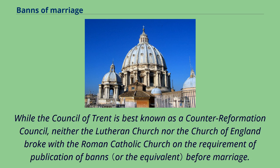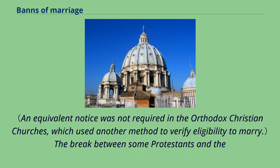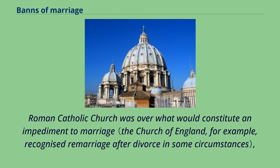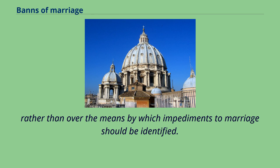While the Council of Trent is best known as a counter-reformation council, neither the Lutheran Church nor the Church of England broke with the Roman Catholic Church on the requirement of publication of banns before marriage. The break between some Protestants and the Roman Catholic Church was over what would constitute an impediment to marriage, rather than over the means by which impediments to marriage should be identified.